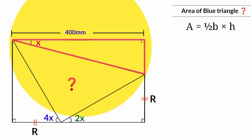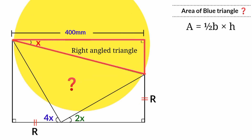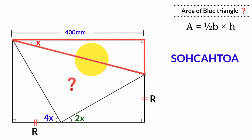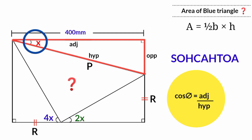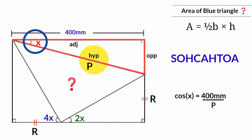But from this triangle here, since this is a right angle making it a right-angled triangle, we can use SOH-CAH-TOA to find the length of this side. Let's call that length P. From angle X here, this is the opposite, this is the adjacent, and this is the longest side — the hypotenuse, which faces the right angle. Using CAH: cos θ = adjacent over hypotenuse. Theta is angle X, the adjacent is 400mm, and the hypotenuse is P. So cos X = 400mm / P.